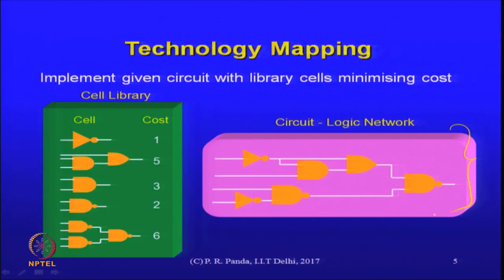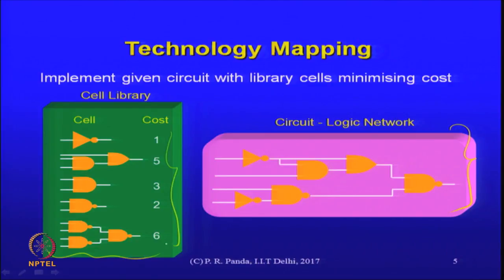So far we do not know anything about the physical properties - these are just logical gates that are chosen. As far as technology mapping is concerned, this is just a specification of the functionality of that circuit. Now I need to realize that in terms of elements chosen from a cell library. Associated with each of those cells, let us put a cost - this is a simplification of course. If I choose an inverter the cost is 1, if I choose this AND gate the cost is 5, and so on. Our problem in technology mapping is to find a way of realizing that logic network in terms of elements selected from that cell library in a way that the total cost is minimized.